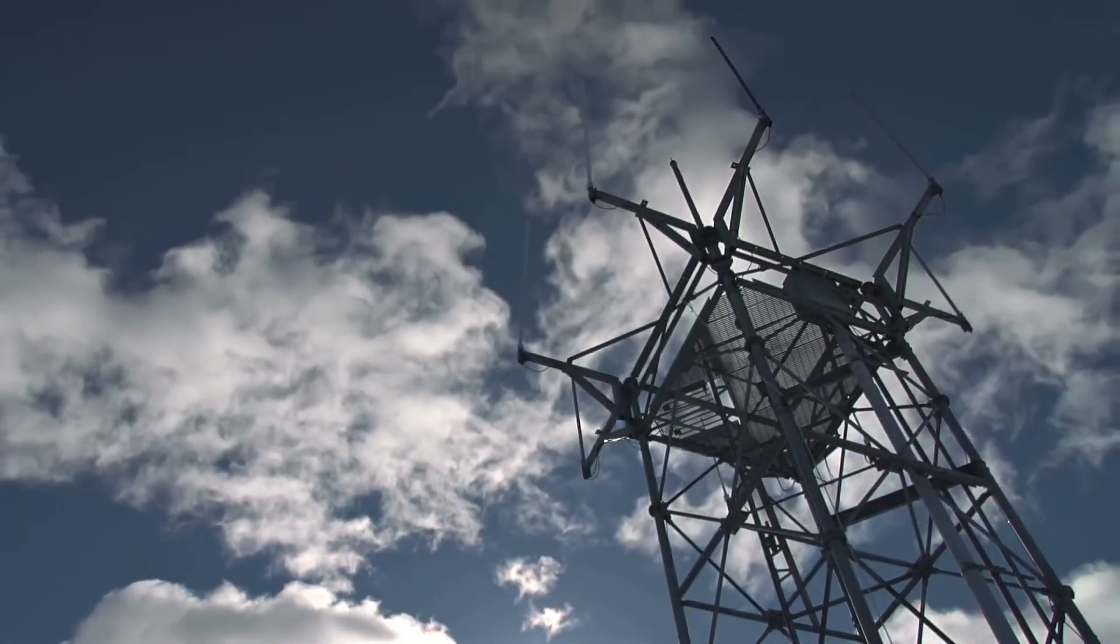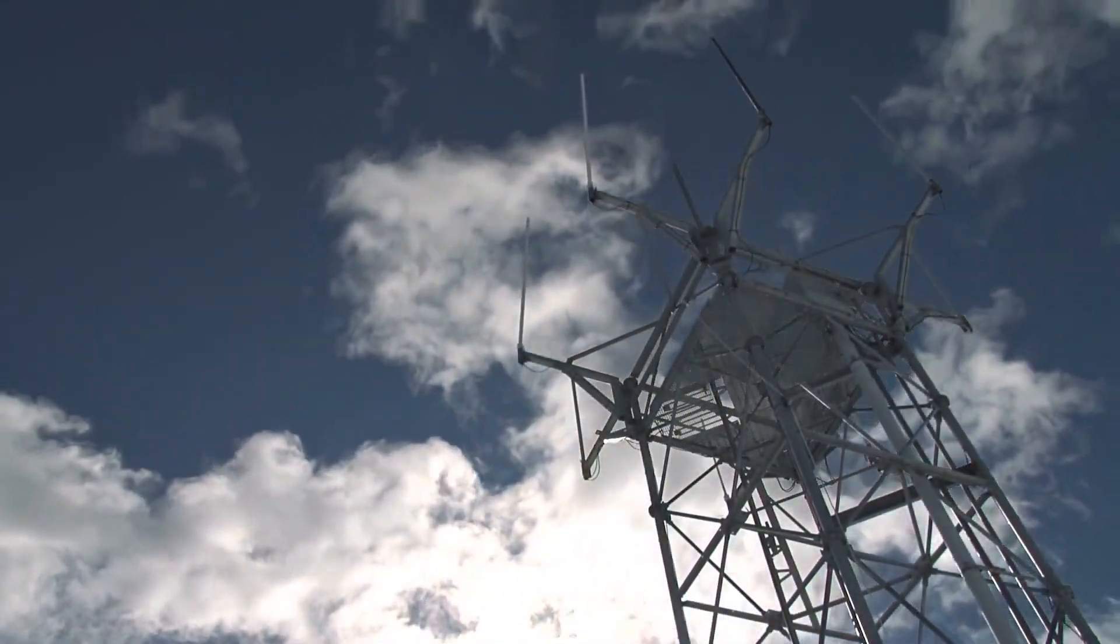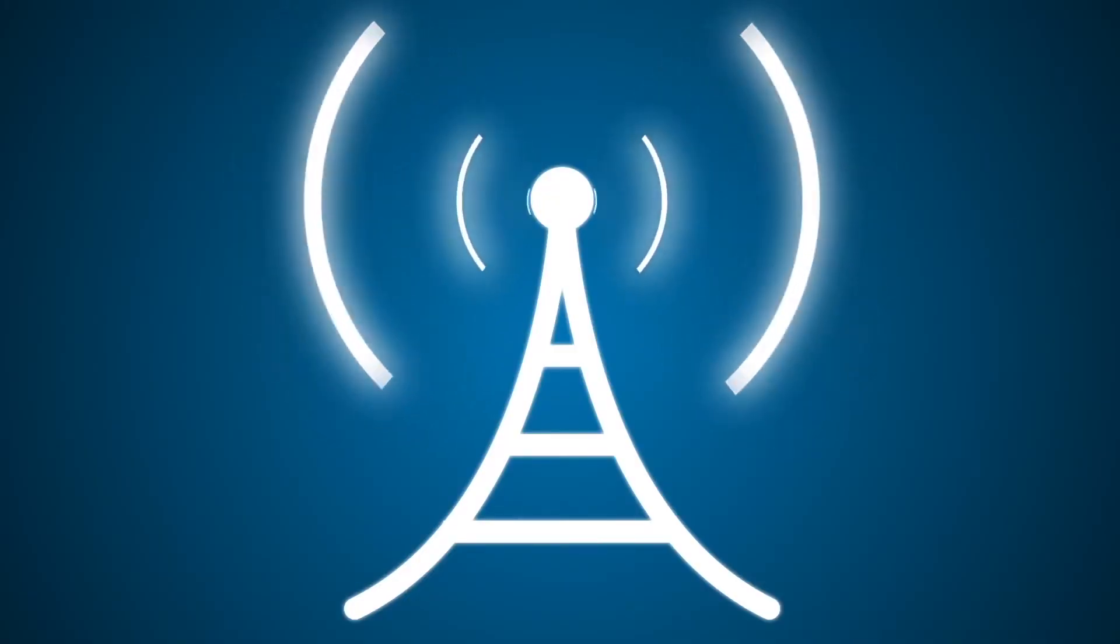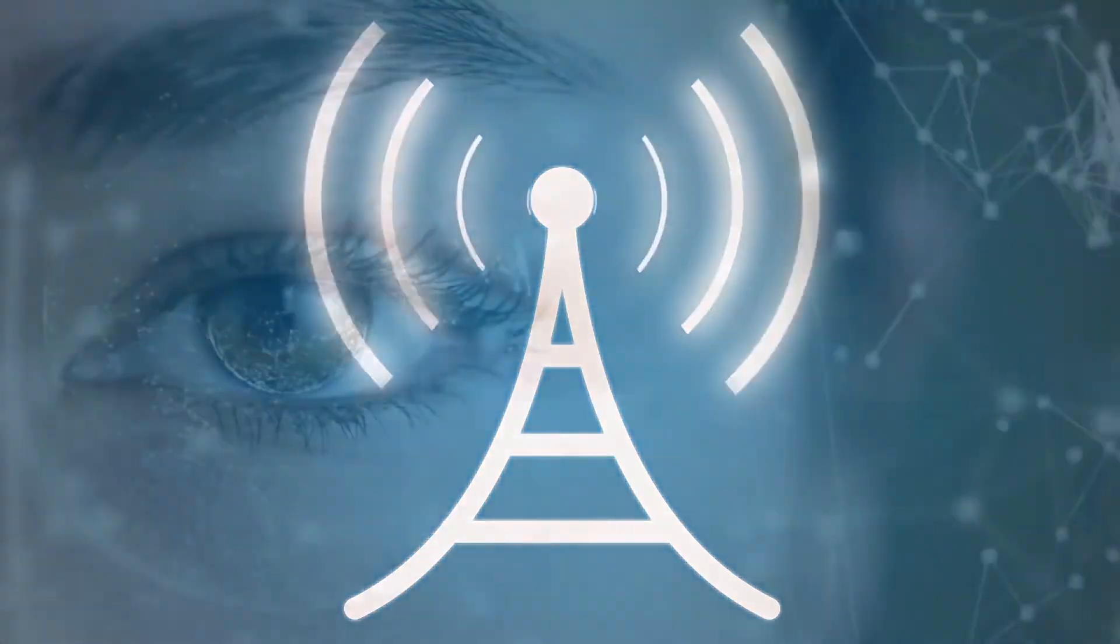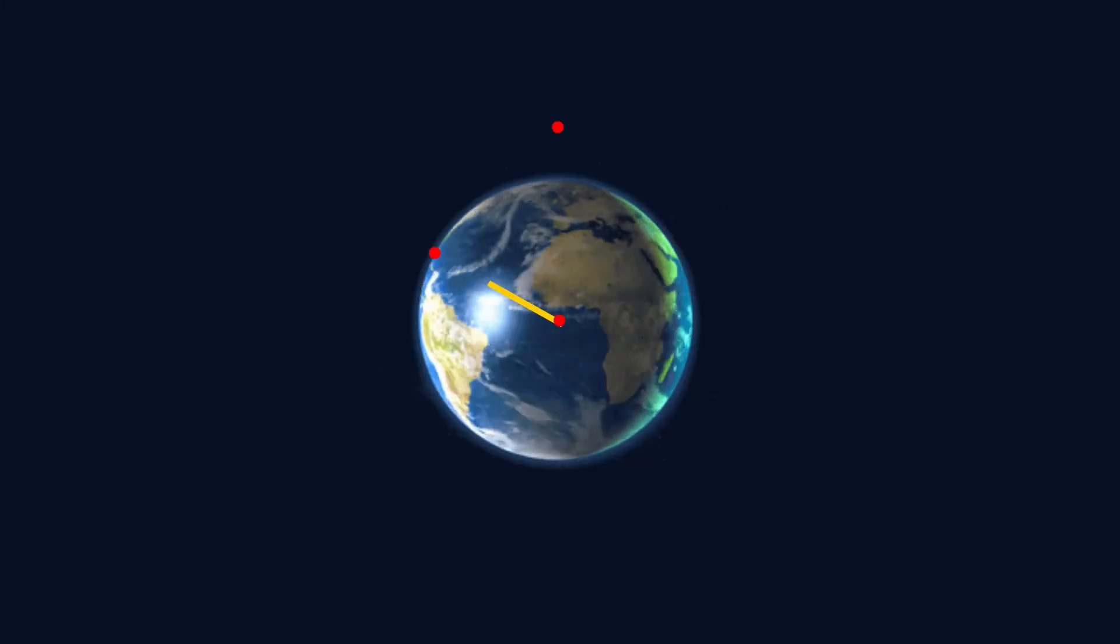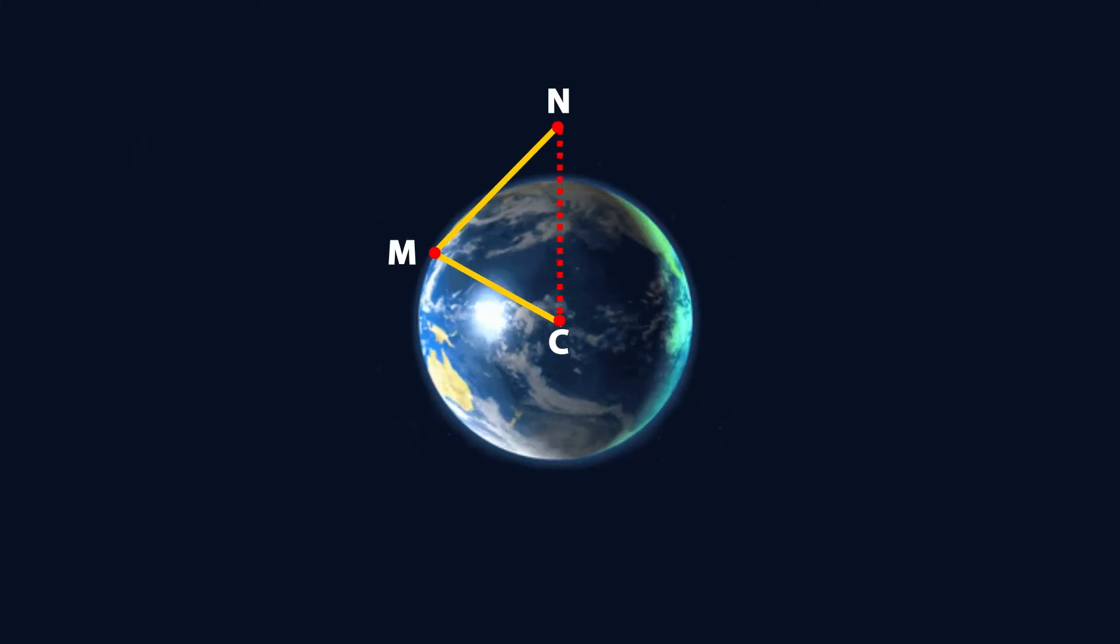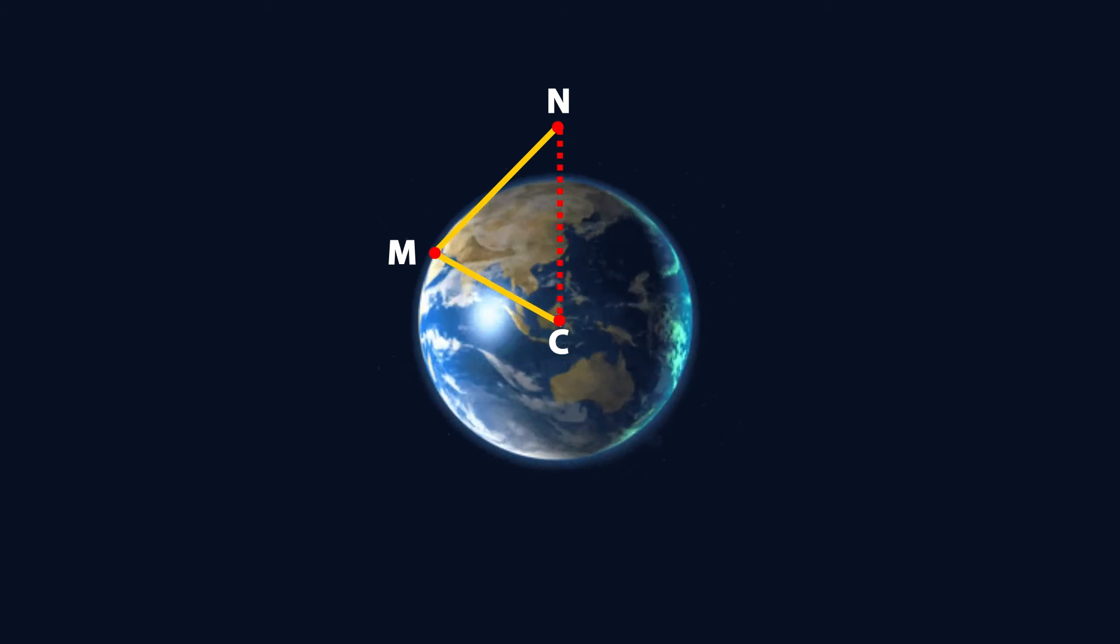Tangents are also used in applications related to circles. For example, radio signals will reach a distance from the antenna on the tower to the horizon. The visible side to the horizon represents the point of tangency, where no other parts of the earth can be seen.